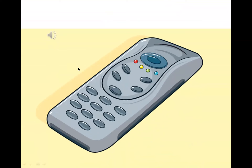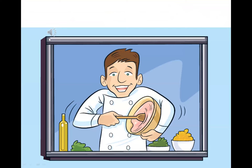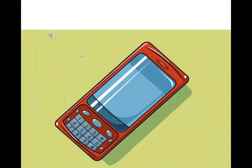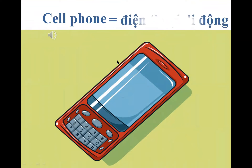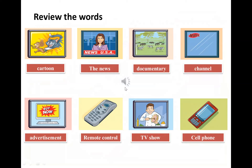Remote control — đồ điều khiển tivi. TV show — tiết trình truyền hình. Cell phone — đó là điện thoại di động. Rồi một lần nữa chúng ta sẽ review lại 8 từ này nhé các bạn. Các bạn phải nhớ thật là kỹ 8 từ này trước khi bước vào phần bài đọc nhé.